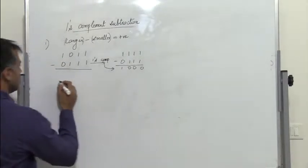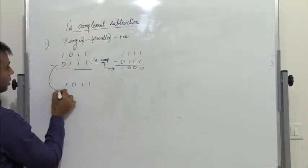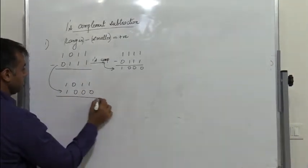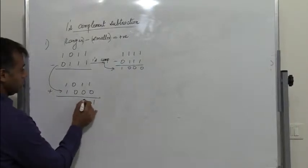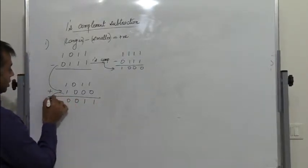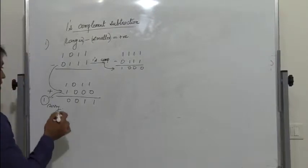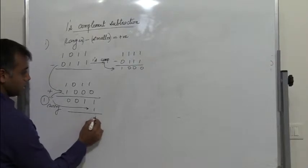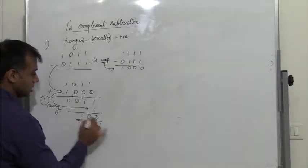So we have 1011 and the 1's complement of 0111 which is 1000. We perform addition and get 11100 with a carry — that is, 0 with a carry. The carry is then added back: 1 plus 1 is 0 with a carry 1, and again 1 plus 1 is 0 with a carry 1.